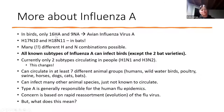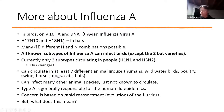In birds, there are 16 of the hemagglutinin and 9 of the neuraminidase — those are all what we would consider avian influenza. Interestingly, H17 and H18 are only ever found in bats. It's kind of a side note, not really relevant here, but I thought it was cool.